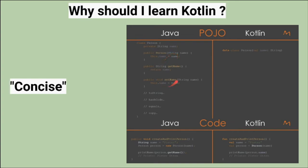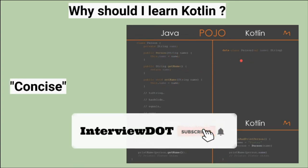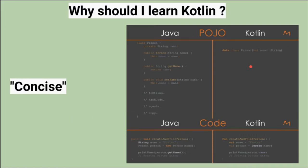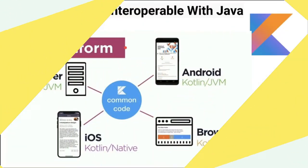Look at the Java POJO class and the Kotlin class — it's almost the same, but the number of lines has been reduced. And Kotlin provides more APIs which help developers build products faster. And it is safe — handling null pointer exceptions is really hard and challenging, but Kotlin helps us to avoid null pointer exceptions in a better way.